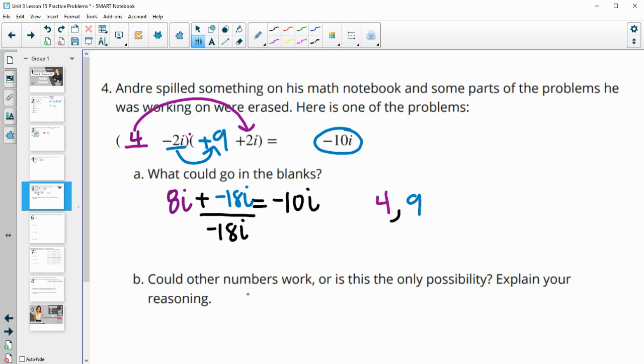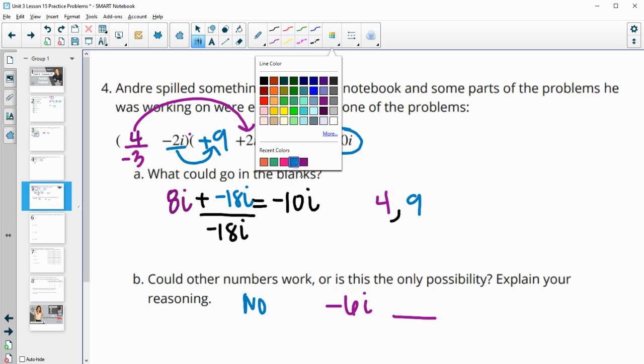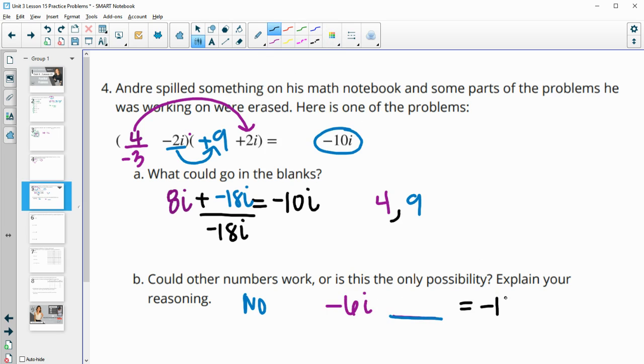Now, are those the only numbers that could work? No. So then you could just come up with another example. So if I put a negative 3 here, negative 3 times 2i would be negative 6i. So then what would we need to go in that other one to end up totaling negative 10i? So we would need this to be a negative 4i. And remember, we're doing negative 2i times that number. So then we would have to put a 2 in here because negative 2i times 2 would give us negative 4i. So you could also put in negative 3 and 2. So there's a bunch of different ways to do this. They just have to multiply by these and add to negative 10i.